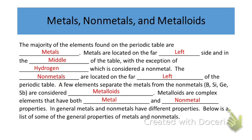All right. So as far as metals, non-metals, and metalloid properties go, there are some basic things or ideas I want you to be able to have down. The majority of the elements found on the periodic table are metals. The metals are, again, located on the left side and around the middle of the table, with the exception of hydrogen, which we just talked about, which is considered a non-metal. The non-metals are located on the far right side of the periodic table.